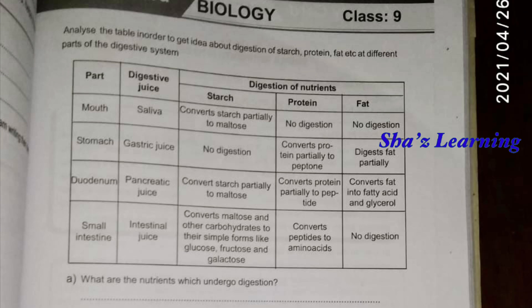Now we are going to put the starch partially into the mouth. Starch is not completely digested there. We are going to put the starch in the small intestine, where it is going to be digested. We are going to become peptide, then lactose, fat, and glycerol as well. When we take the small intestine, we also have starch completely digested.